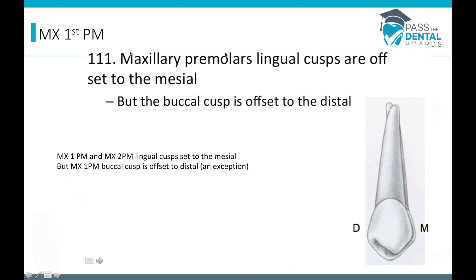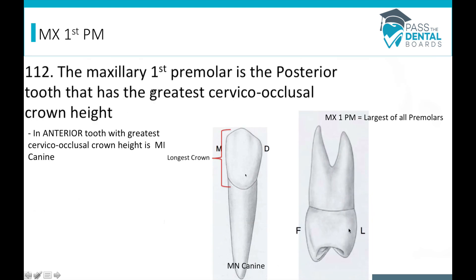The maxillary premolars' lingual cusps are offset to the mesial — this applies to both the maxillary first and second premolars. Remember that the maxillary first premolar's buccal cusp is offset to the distal, which is an exception compared to most teeth. The maxillary first premolar is the largest of all the premolars and is the posterior tooth with the greatest cervico-occlusal crown height — cervico-occlusal just means crown height, from cervical up to occlusal.